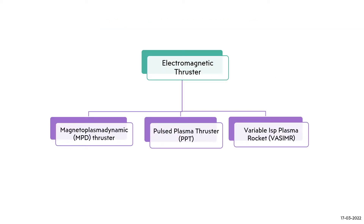Electromagnetic Thrusters can be classified into three types: the Magnetoplasmadynamic Thruster (MPD Thruster), the Pulsed Plasma Thruster (PPT Thruster), and the Variable Specific Impulse Magnetoplasma Rocket (VASIMR).